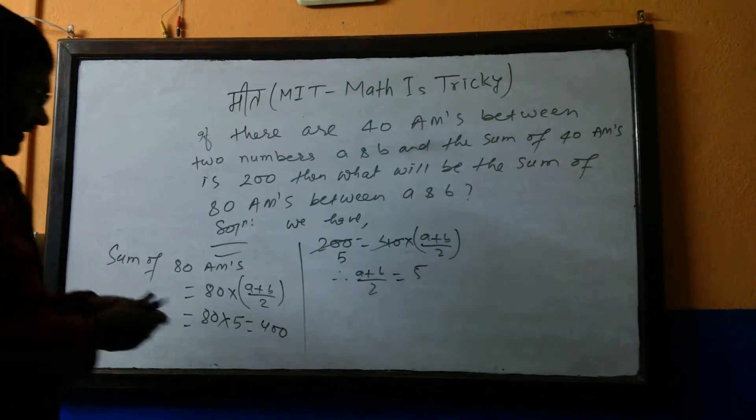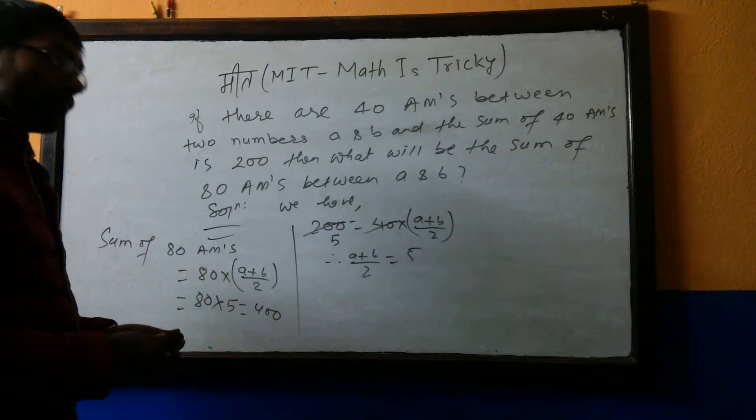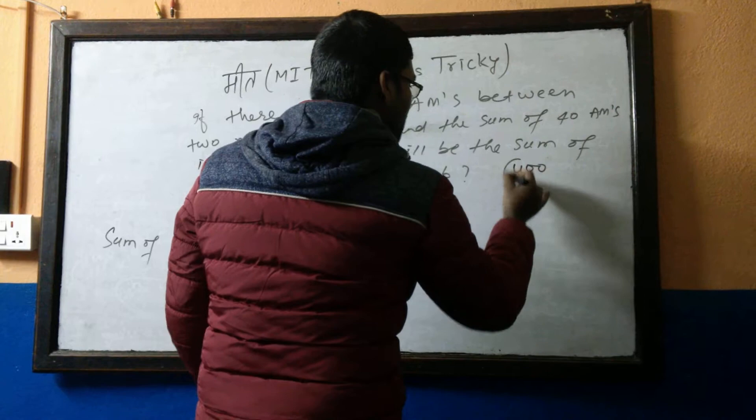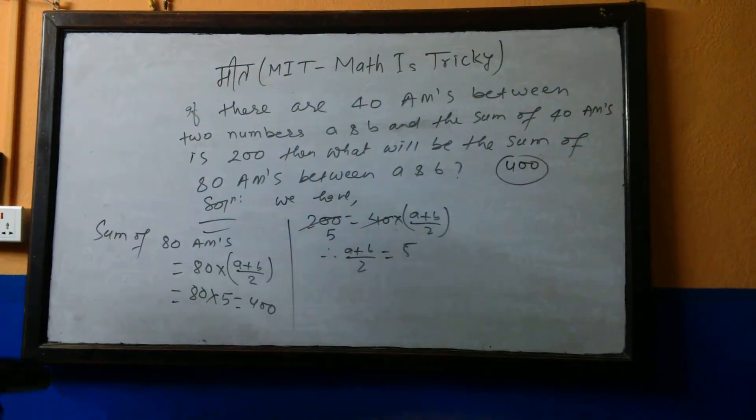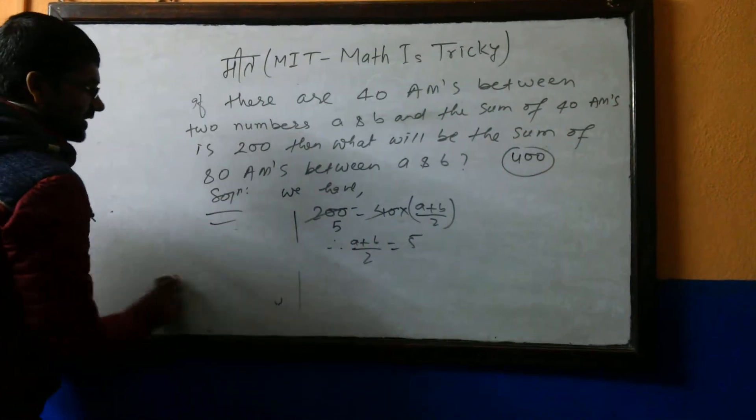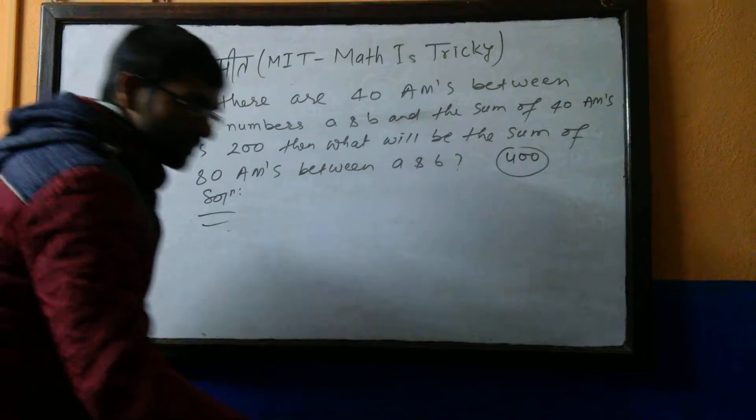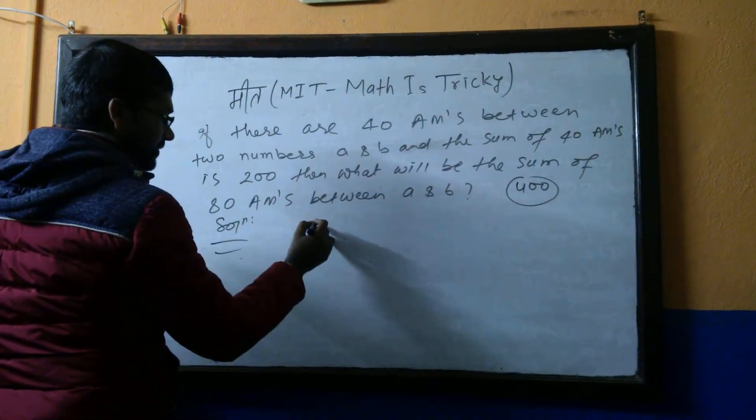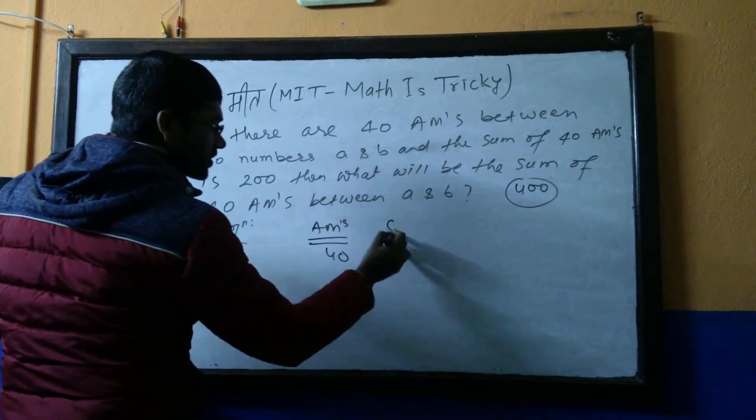So now this is the way to get the answer. We got here answer 400. Now see here, 400 is your answer. Now see the trick: if you don't know this formula, then without knowing this formula also you can write the answer.